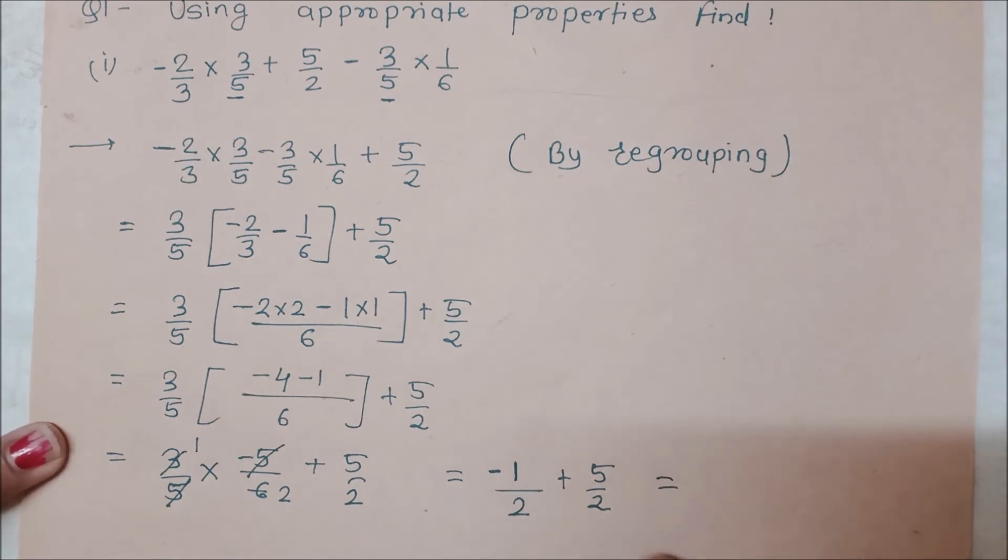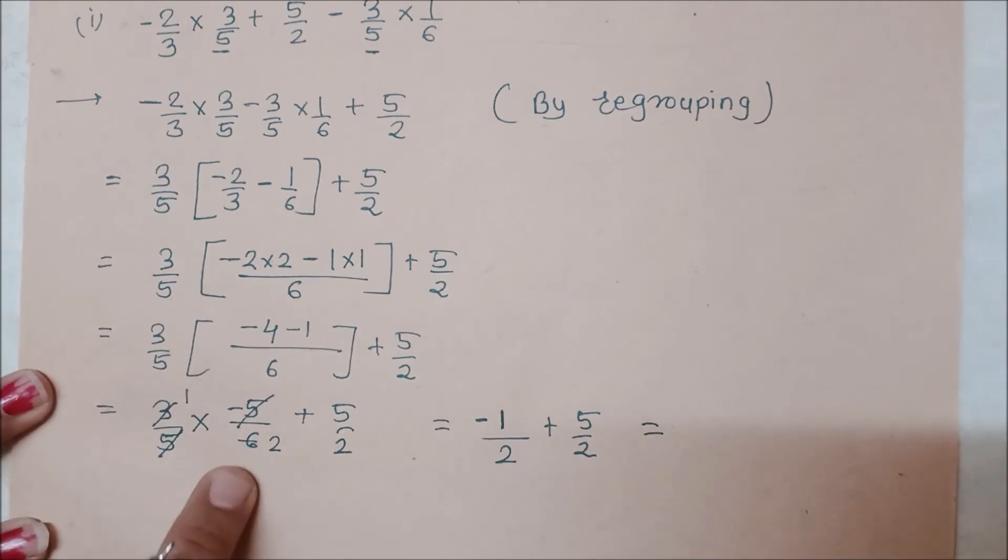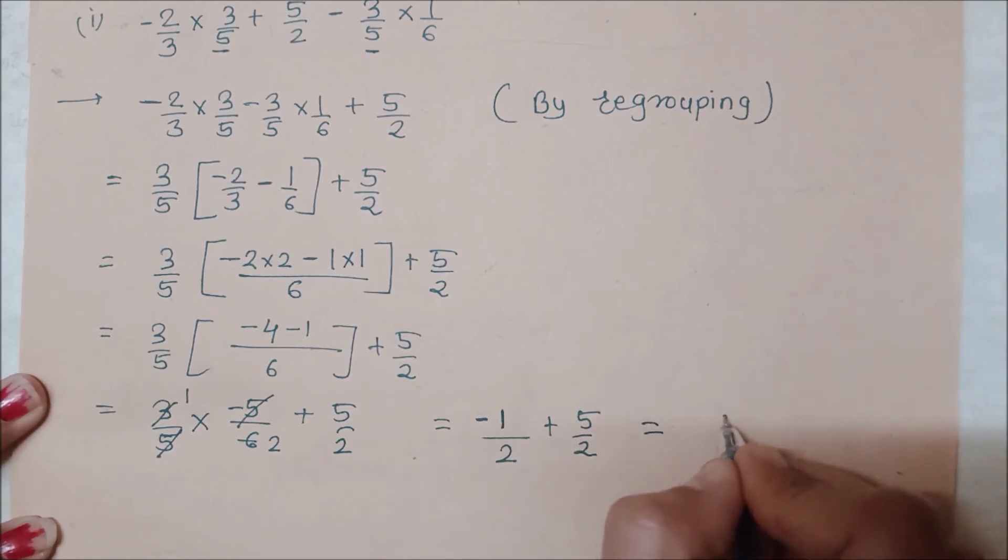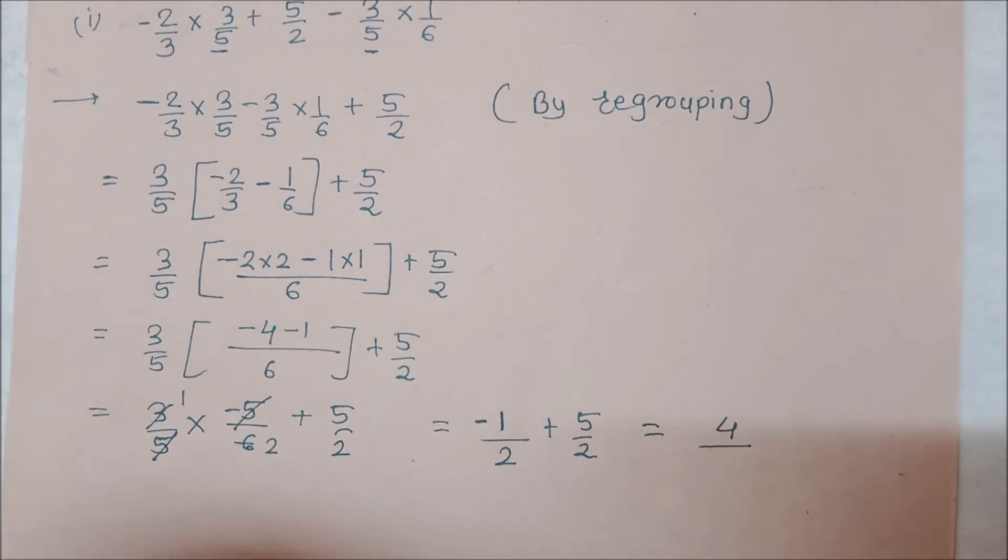Now we will do LCM of both. What is it? Same. The LCM is same. So what will happen here? This was minus 1 upon 2 plus 5 by 2. When minus and plus are there, the smaller number is subtracted from the bigger number, and the sign of the bigger number comes. So 5 minus 1 becomes 4.